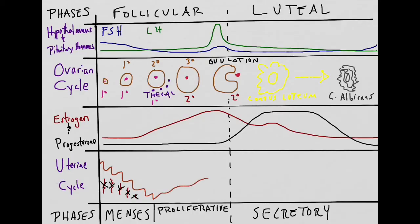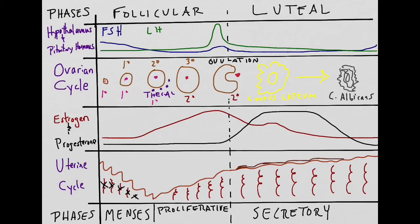During the proliferative phase, the endometrial layer begins to build again. Spiral arteries will come back and supply blood to the new tissue. The functional layer of the endometrium will continue to grow in the secretory phase. In addition, uterine glands will secrete mucus, which contains nutrients for a potential zygote.